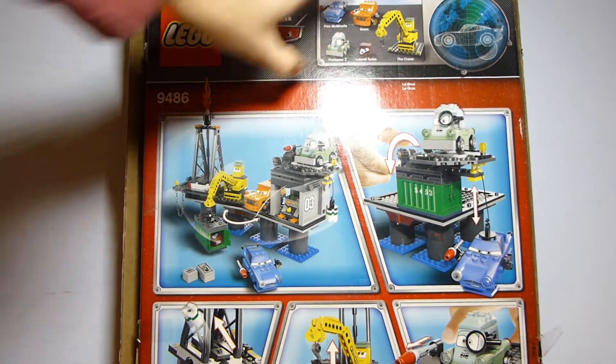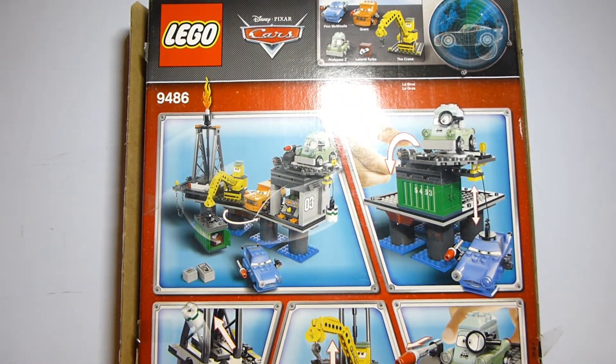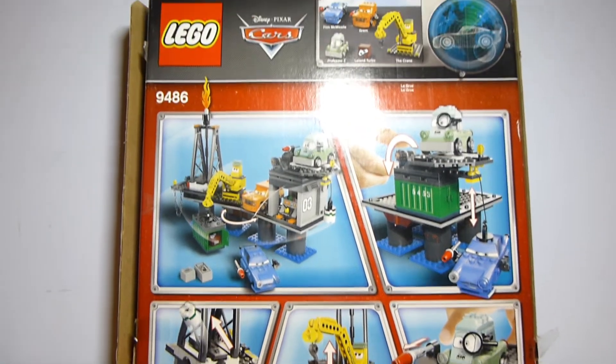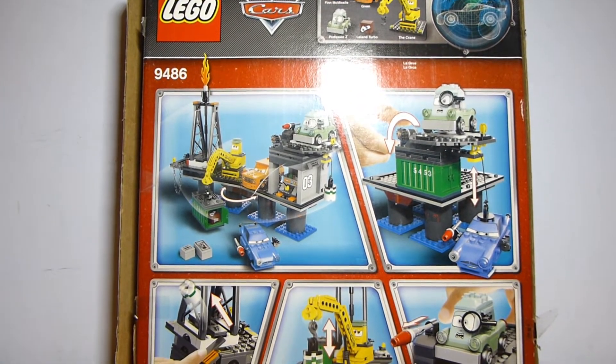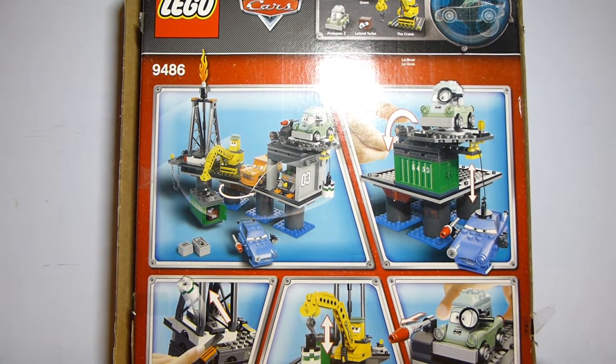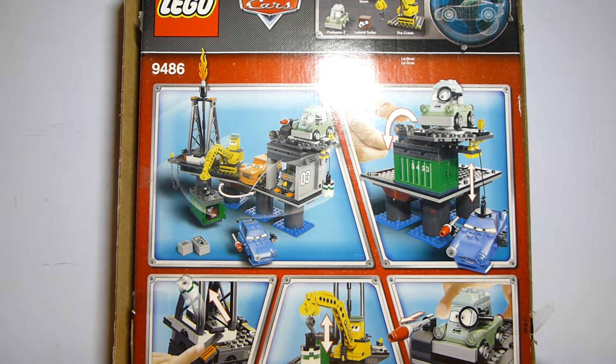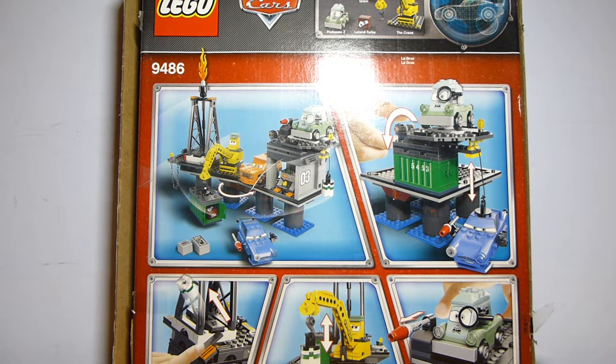It ended up being complete aside from one piece and the flame piece on the top, which is actually even cut off by the box. The box size is really kind of large for a $50 set, very square as well. It shows off all the features on the back.